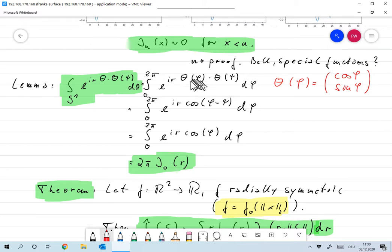Now, this is the scalar product of two unit vectors, so its value is the cosine between the angles. So that's the integral of 0 to 2 pi e to the IR cosine of phi minus psi d phi.